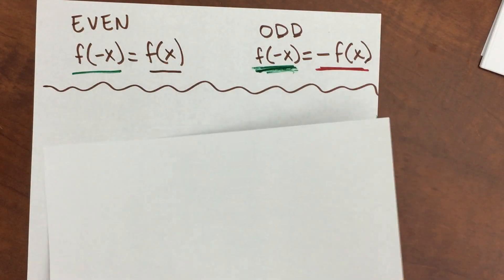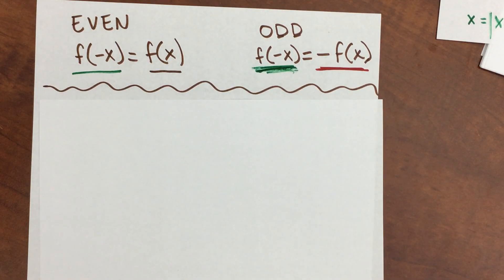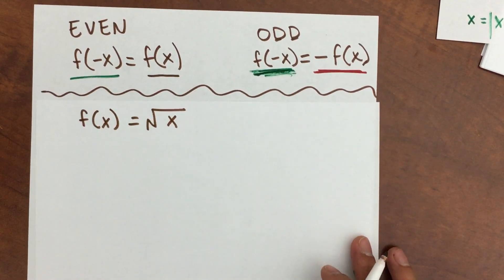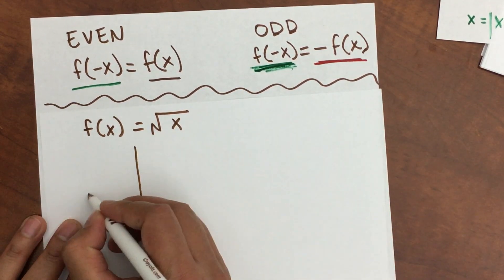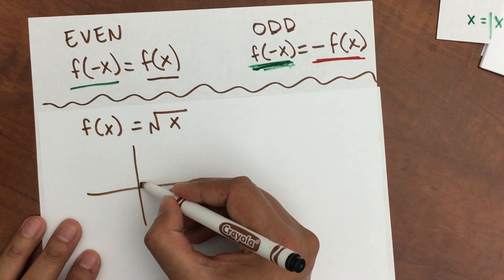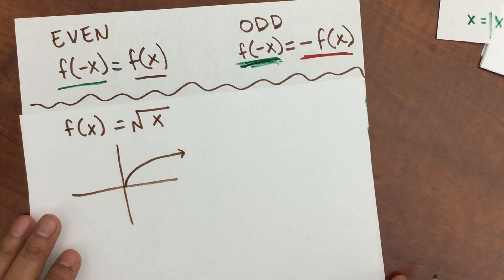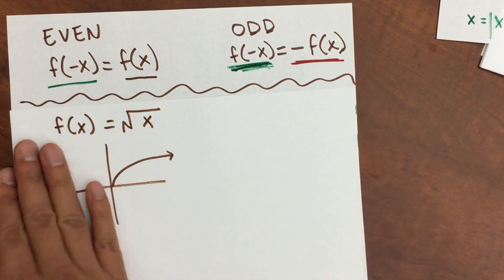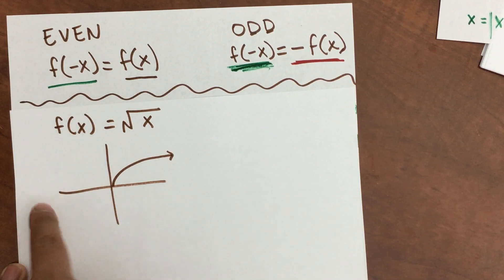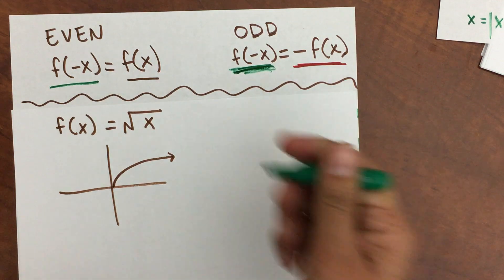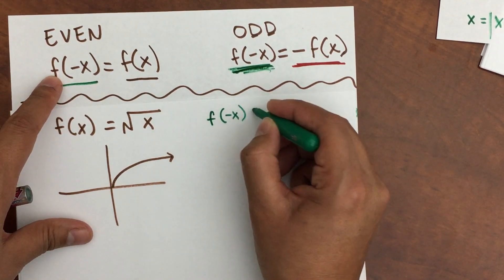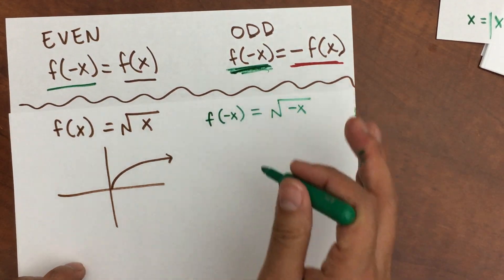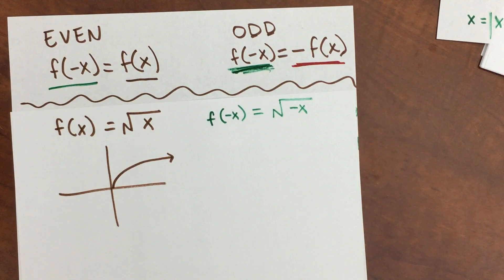Let me write another one. Let's do f of x equals the square root of x, and this time I'm going to start with the graph. If you recall, the square root of x gives you a curve like this. Algebraically, we find f of negative x equals the square root of negative x. It doesn't match the original because one is positive and one is negative inside the radical, and you cannot simplify anymore.